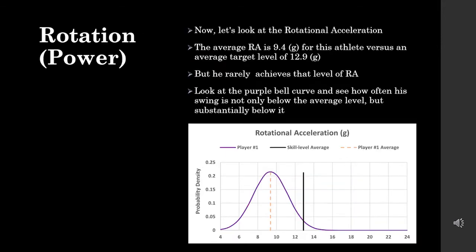Here's a normal distribution of his rotational acceleration on the same exact swings. The minimum target for his level, according to Blast, should be around 13 G's. His average is 9.4, and you can see how the bell curve falls way below 13 G's. So this athlete definitely is lacking a collegiate level degree of rotational acceleration.